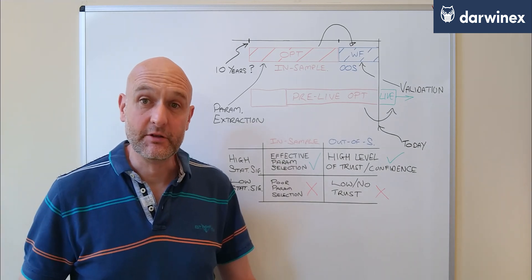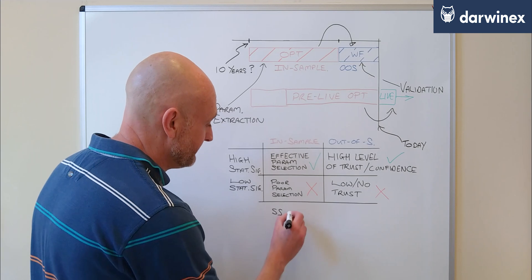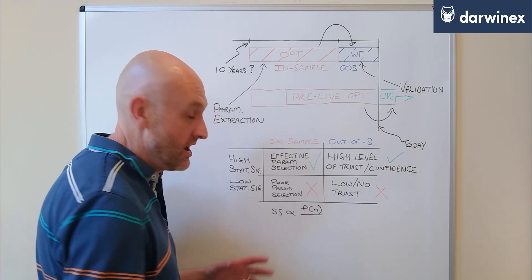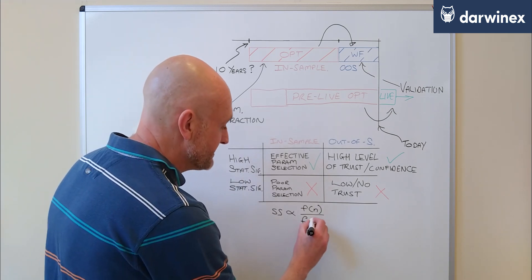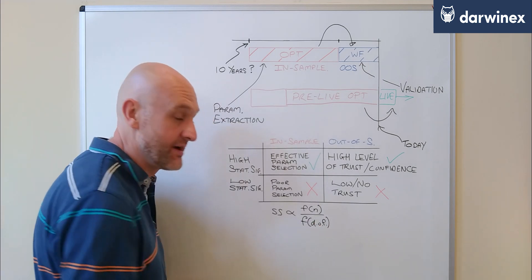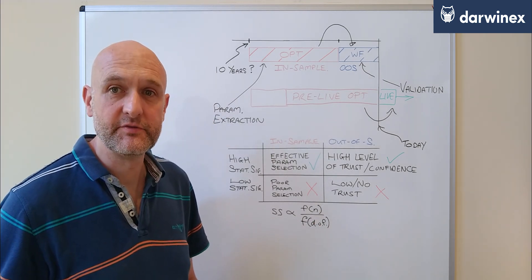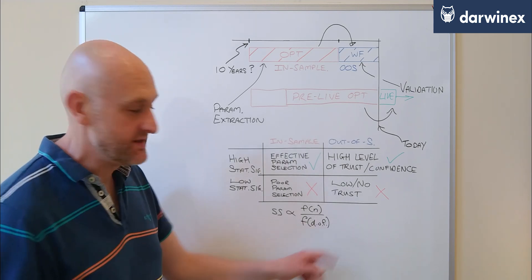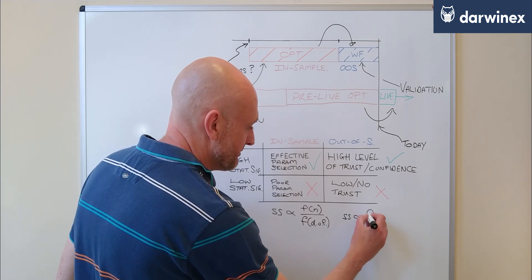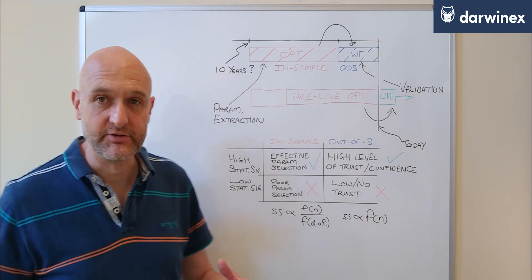So at a very basic level, the level of statistical significance in the in-sample phase is proportional to a function of the sample size over a function of the degrees of freedom. So the number of parameters that we're allowing to have variable values for the optimization process, whereas in the out-of-sample here, the statistical significance is simply proportional to the sample size because we don't have any degrees of freedom.